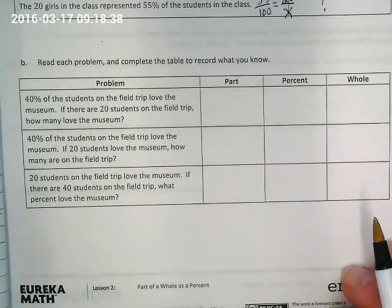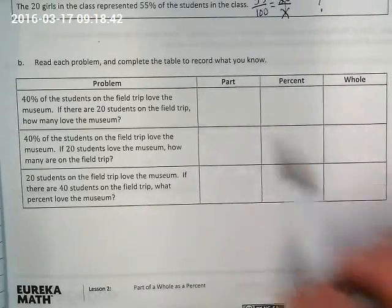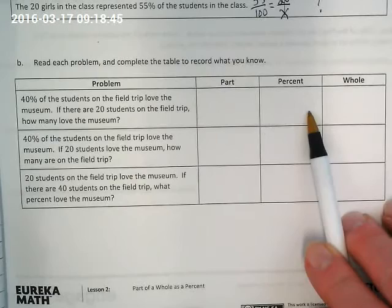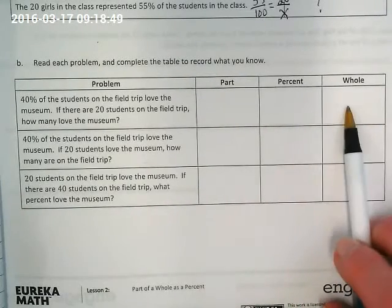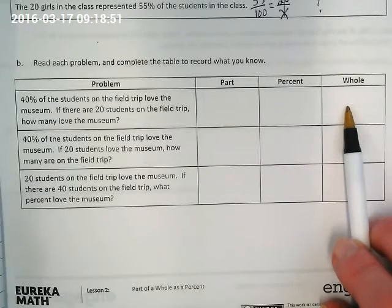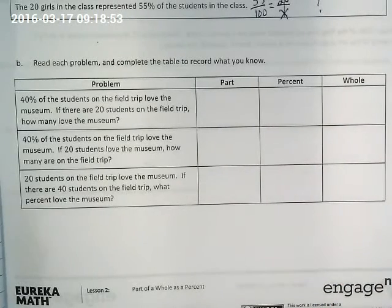Okay, I would like you guys to take a few minutes working with people at your table to complete this. What's the part? What's the percent? And what's the whole? And if we don't know one of those, you can use a question mark or the variable X, okay?